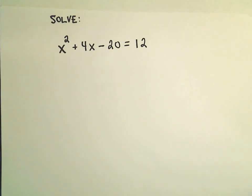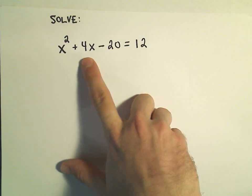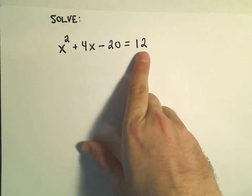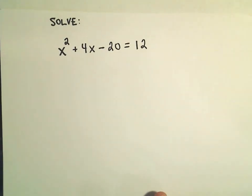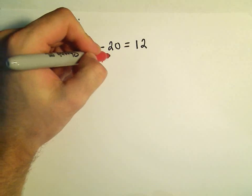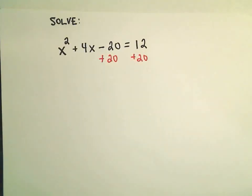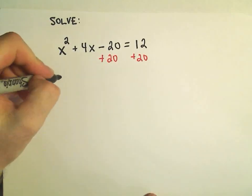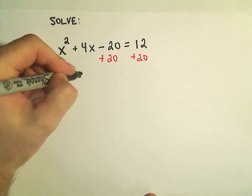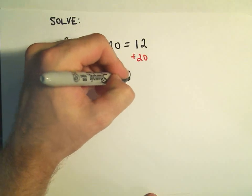So in this case, notice we have x's on one side, we've got a number, and then we also have a number floating around on the right side as well. There's different ways that you can do these, they're all equivalent, but one way to go about doing this would be to get all the numbers on the right side. So the first thing I'm going to do is add 20 to both sides of this equation. So that's going to leave me with x squared plus 4x equals 32.